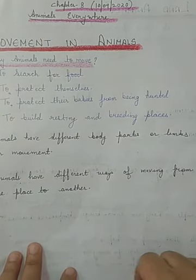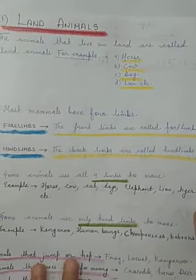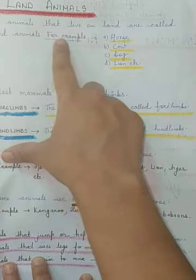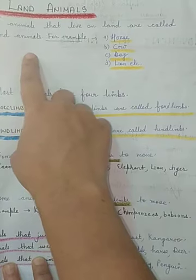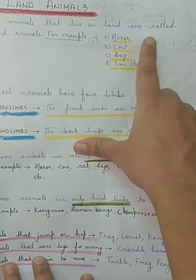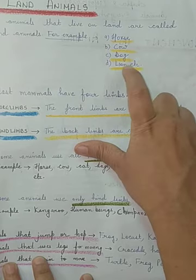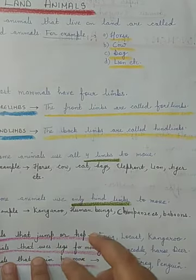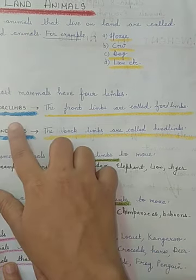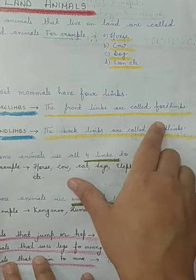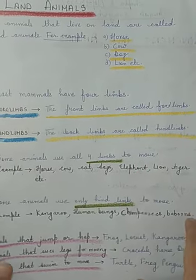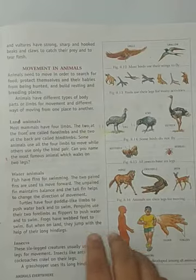Now we will talk about land animals. As the name indicates, animals that live on land are called land animals — for example, bull, horse, cow, dog, lion, etc. Most mammals have four limbs: two in the front and two at the back. The front limbs are called forelimbs and the back limbs are called hind limbs.